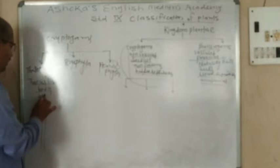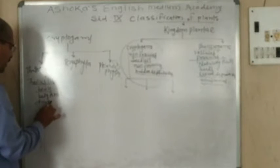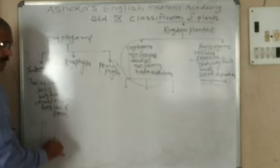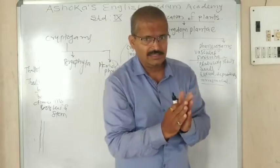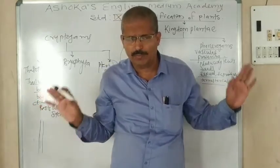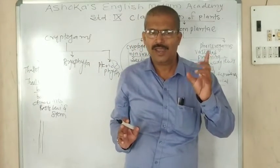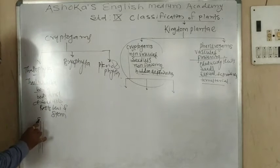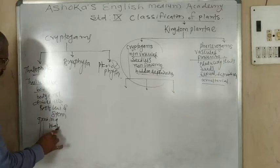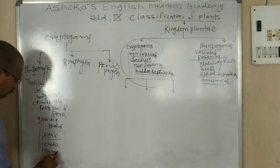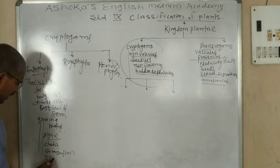Thallophyta means thallus-like body — the body is not divided into roots, leaf, and stem. There is no distinction between root, leaf, and stem. Most Thallophyta are growing in water. The example of Thallophyta is all algae. Under algae, examples include Chara, Sargassum, and Spirogyra.